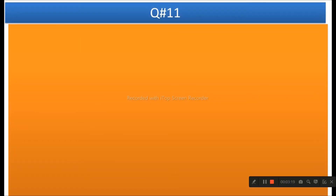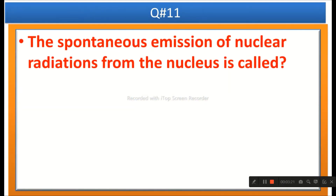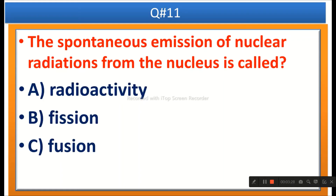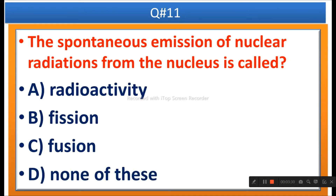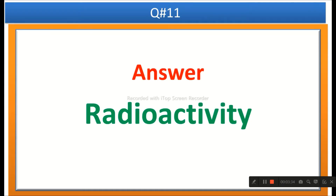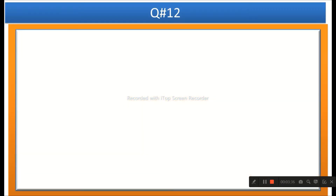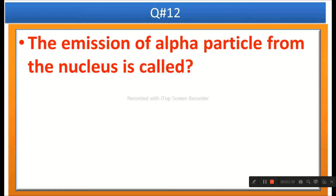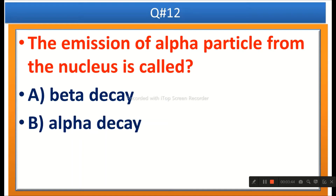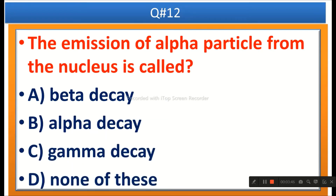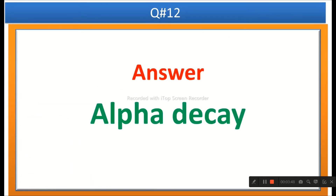The next question: The spontaneous emission of nuclear radiation from the nucleus is called — options are radioactivity, fission, or none of these. The right answer is radioactivity. The next question: The emission of alpha particles from the nucleus is called — options are beta decay, alpha decay, gamma decay, or none of these. The right answer is alpha decay.